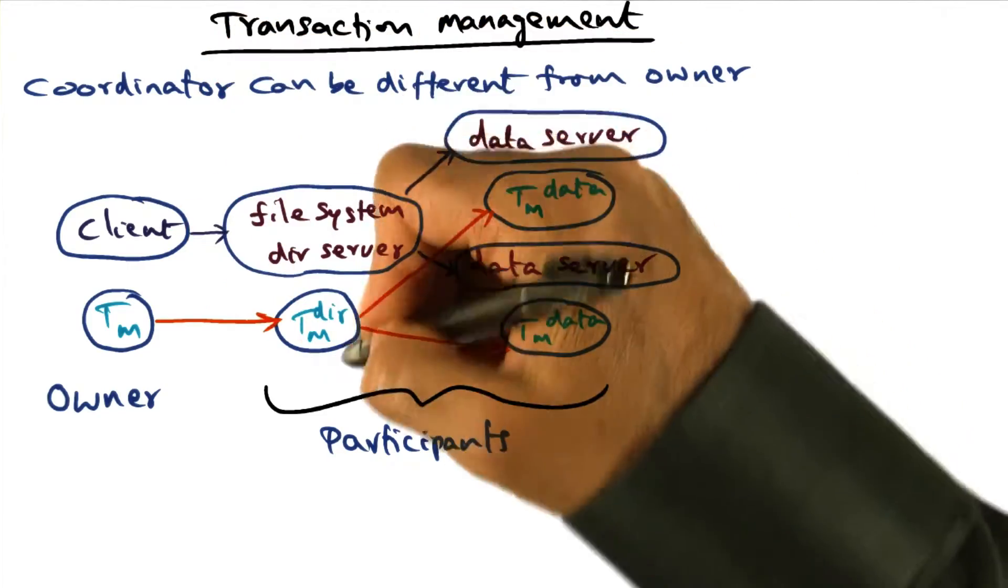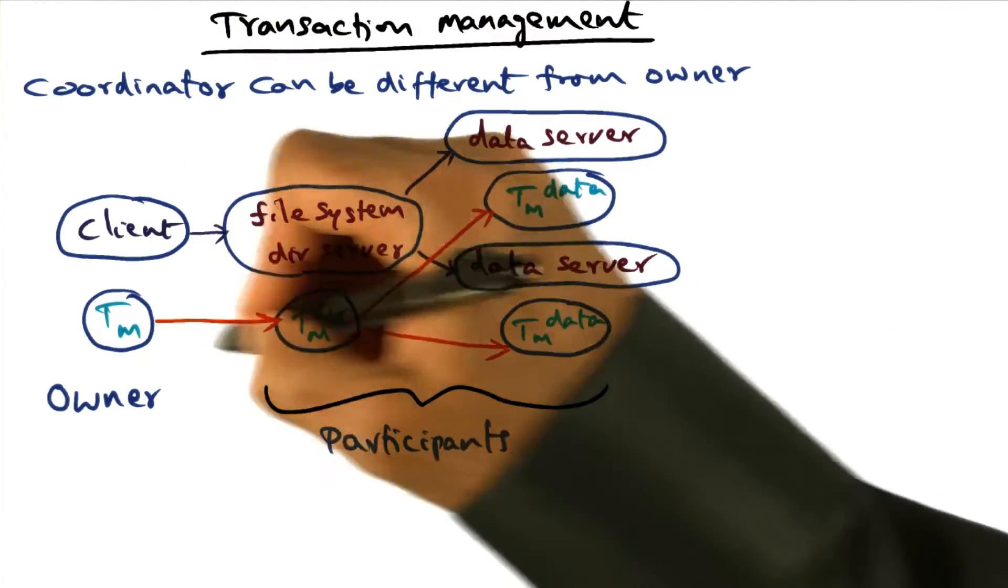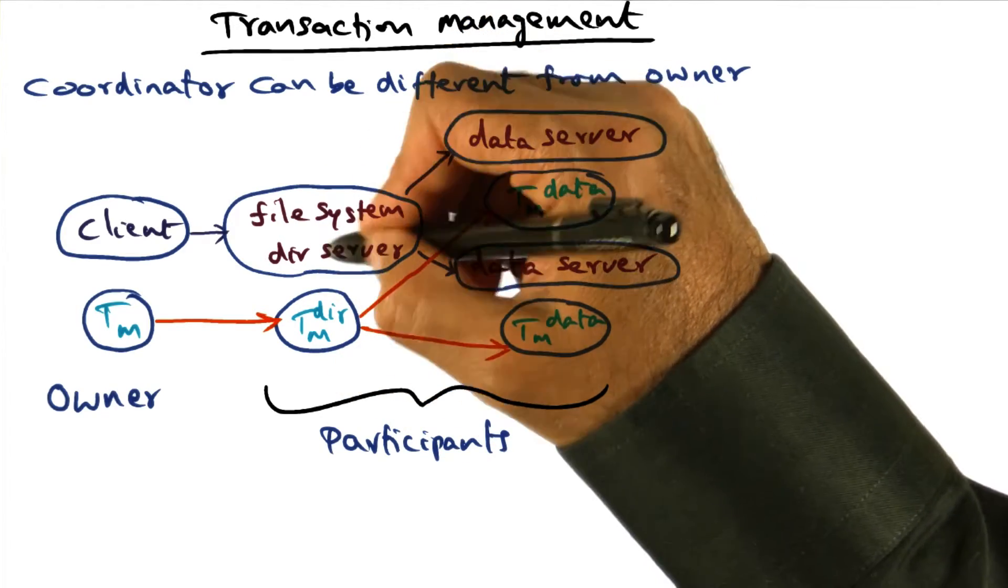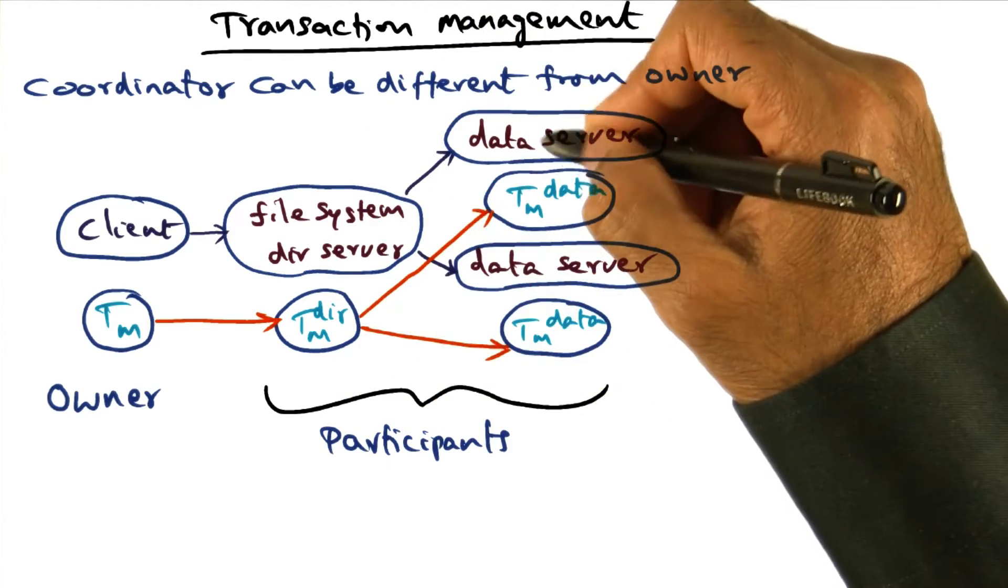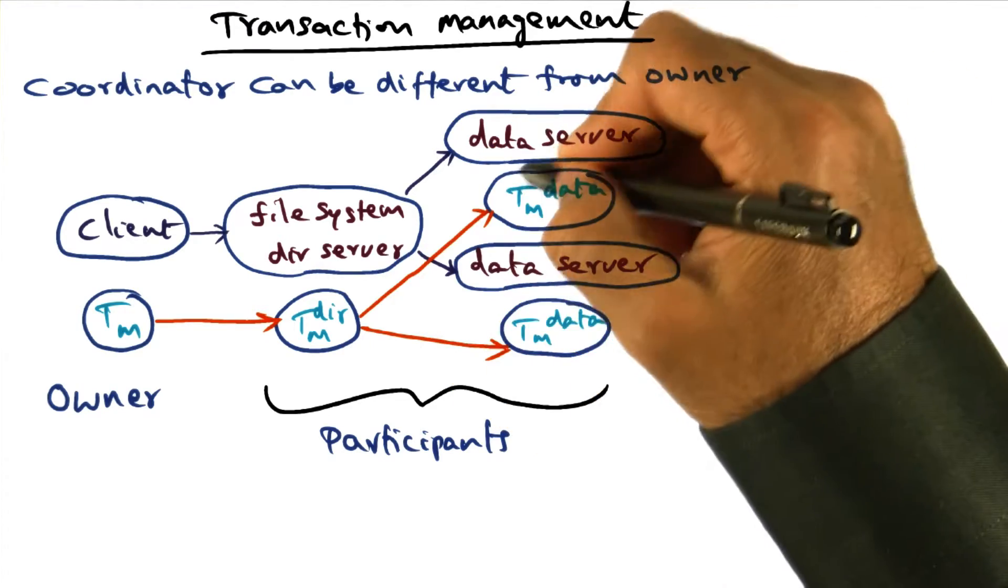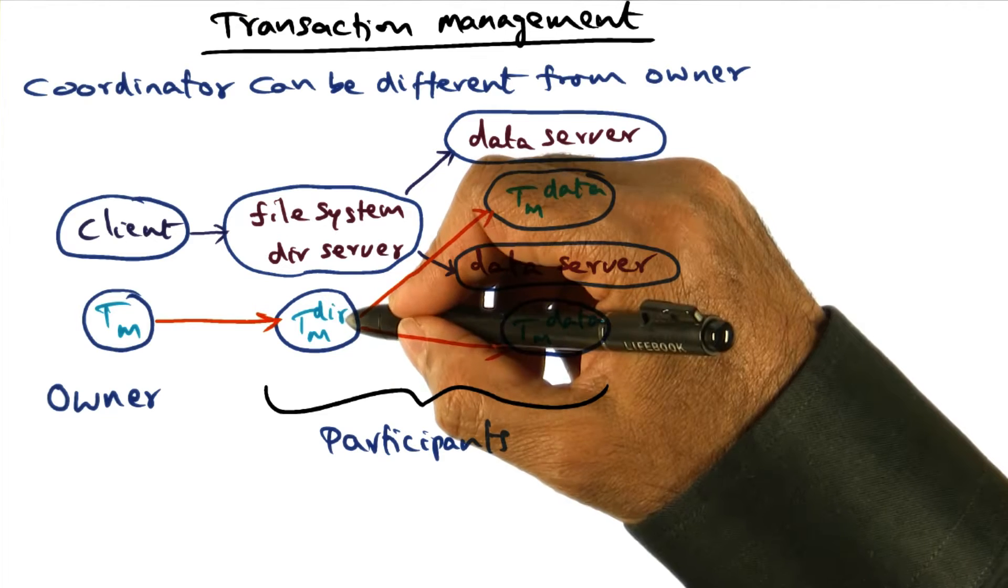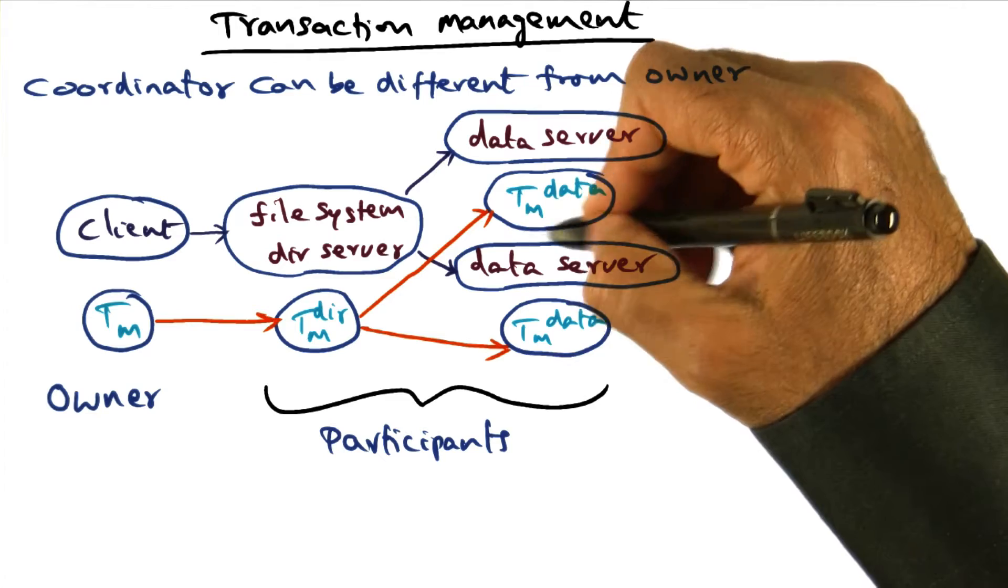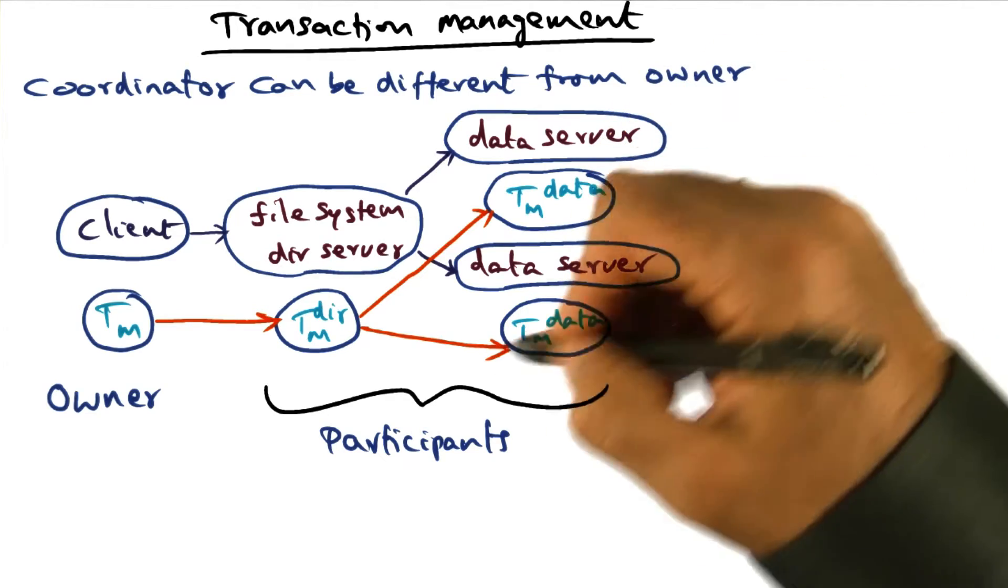The client opening the file - the TM on the owner has a link to a TM on the directory manager, and the directory manager is calling the data servers on two different nodes. Correspondingly, there is a link from the transaction manager on the directory server to the transaction manager on the data server on these two different nodes.